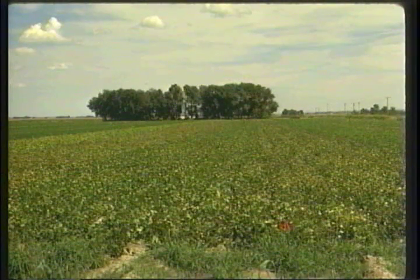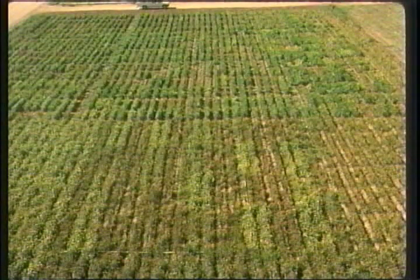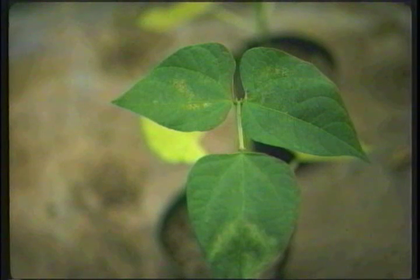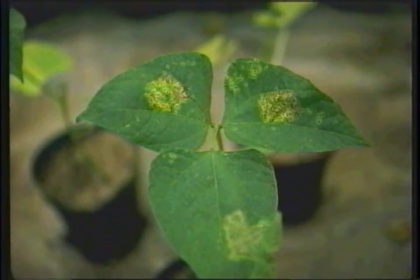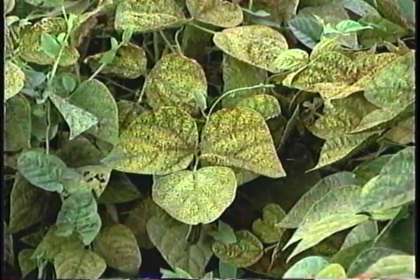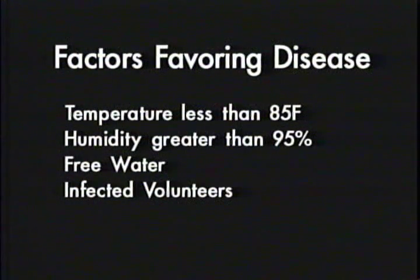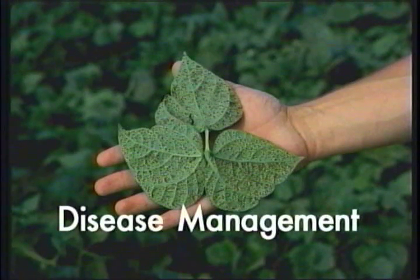Bean varieties can differ in their reactions to rust and the different races which it produces. Some varieties are resistant while others are more susceptible. Rust spores are spread between plants and fields by wind. Multiplication and infection are favored by low to moderate temperature and periods of high moisture during development of volunteer beans and later the new crop beans.